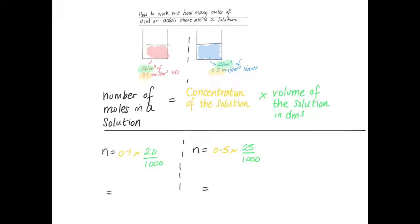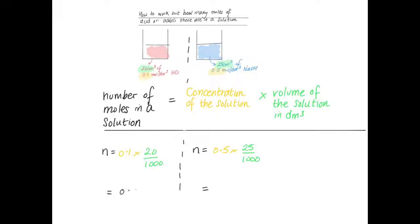Plugging the numbers into the equation: if you have 20 centimeters cubed of hydrochloric acid, that's 20 divided by a thousand decimeters cubed. The concentration is 0.1 moles per decimeter cubed. Putting 0.1 times 20 divided by a thousand into a calculator gives you an answer of 0.002 moles.